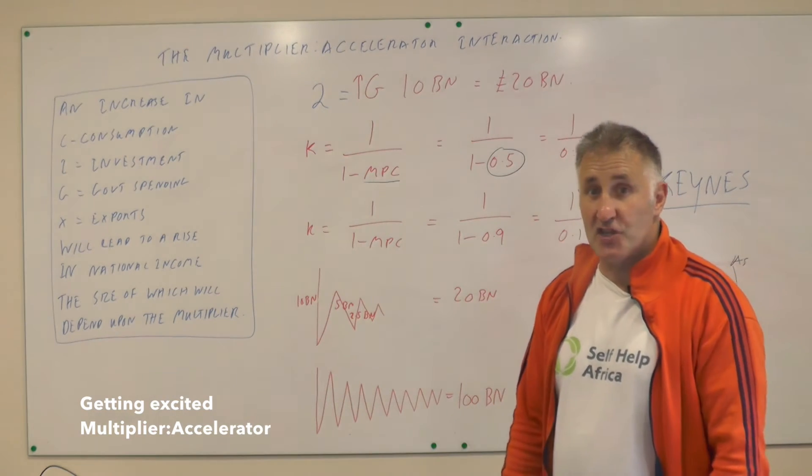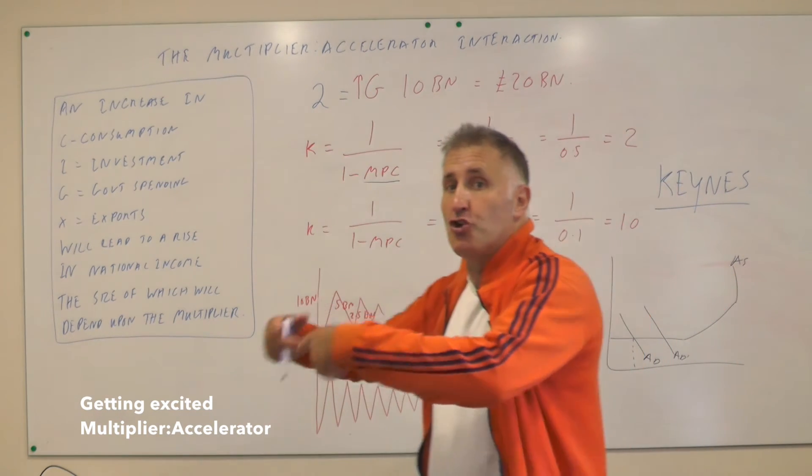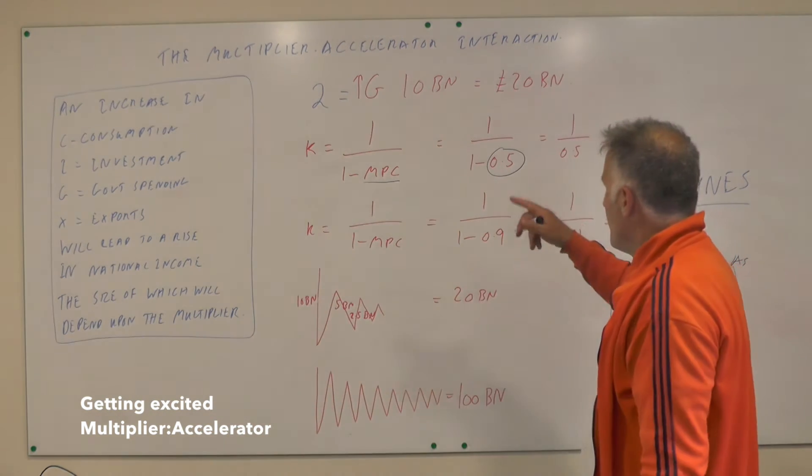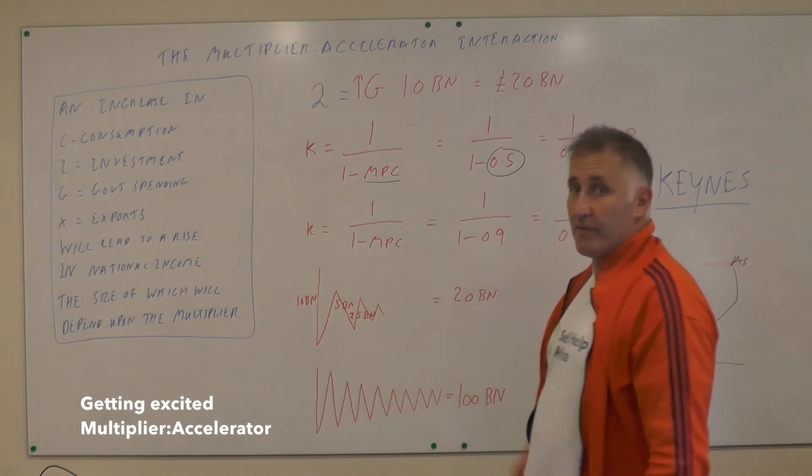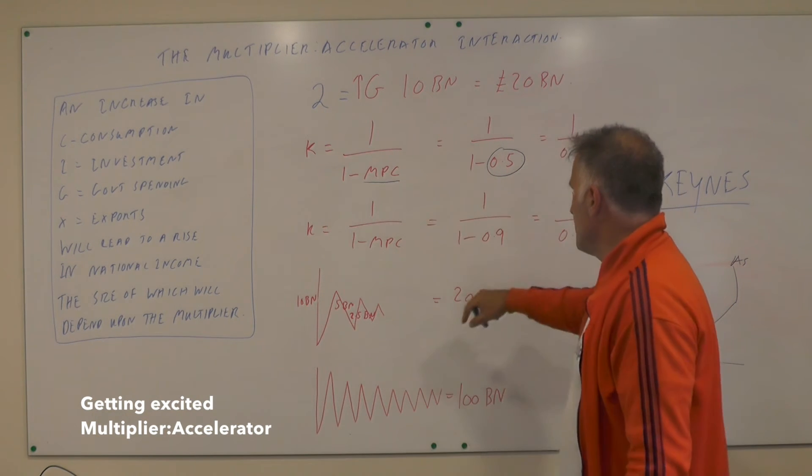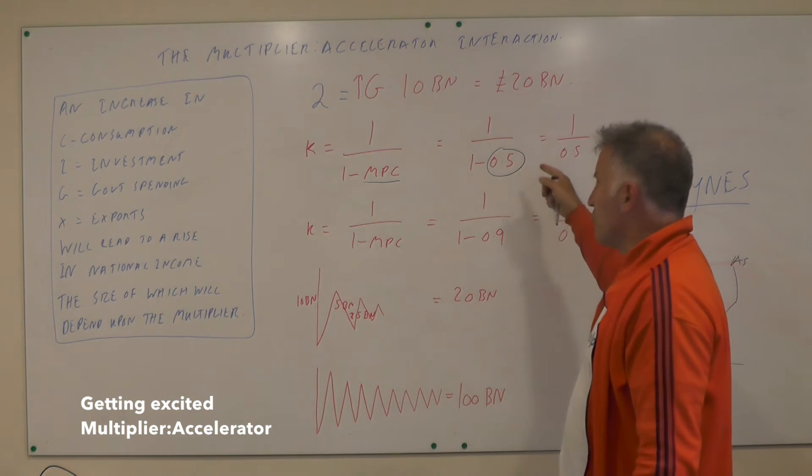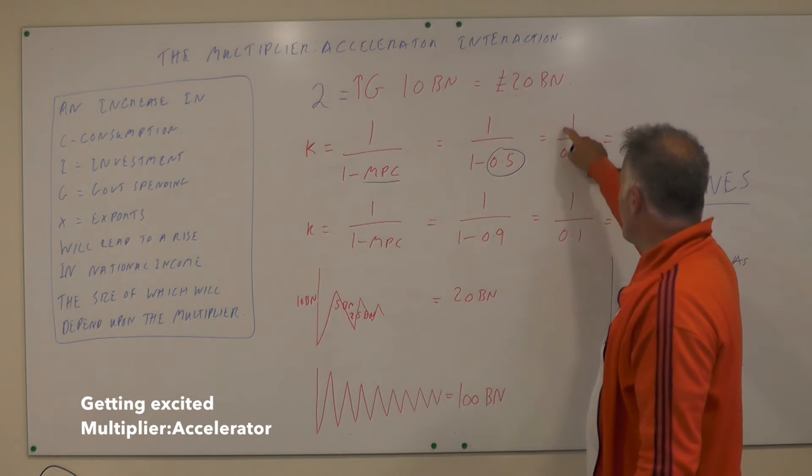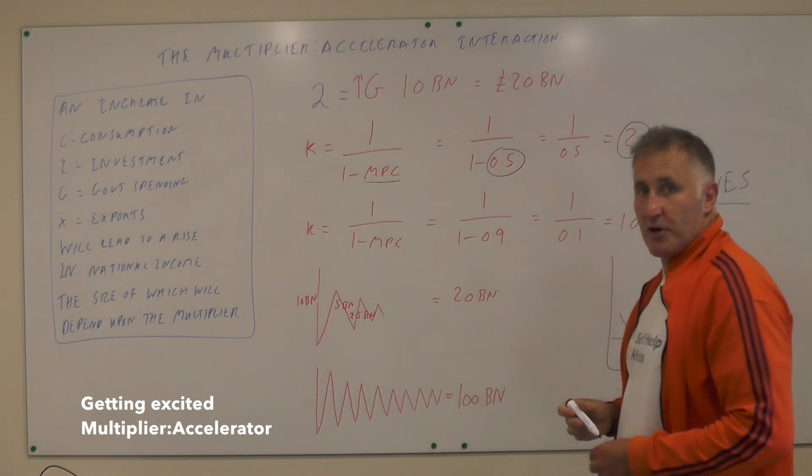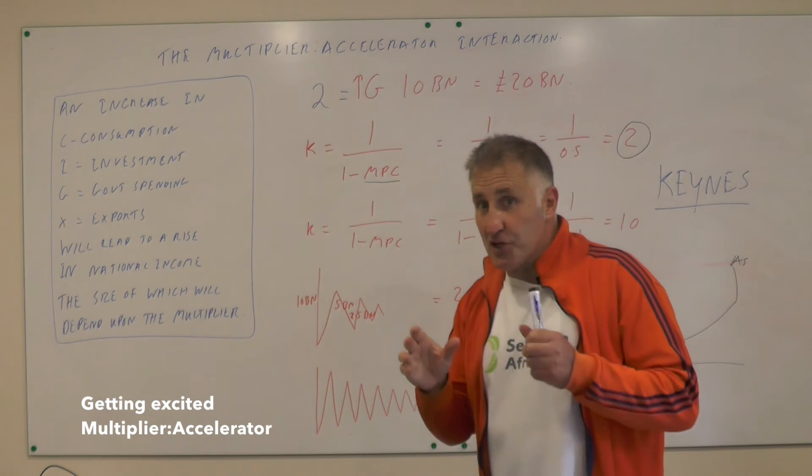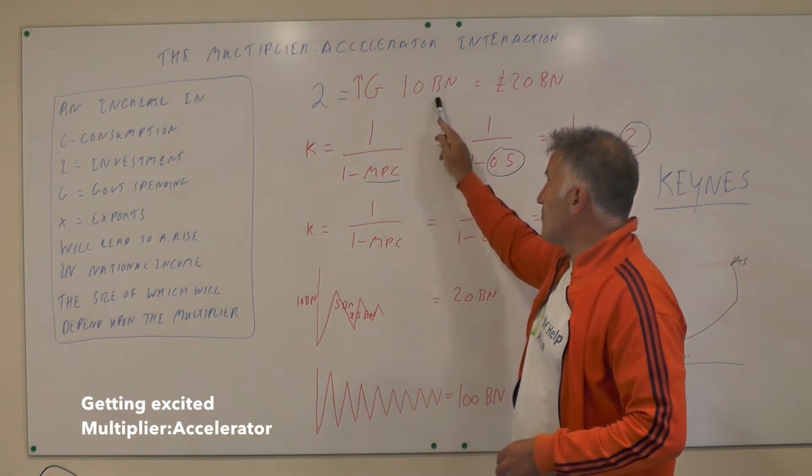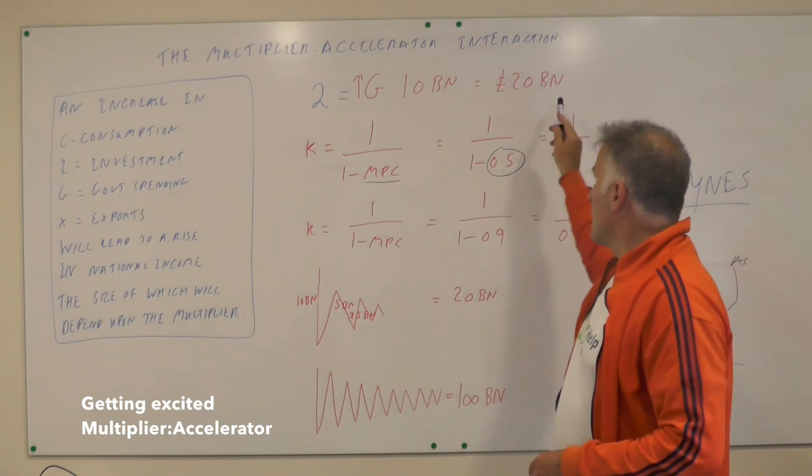So you go on and on. If the MPC is 0.5, then we do one divided by one minus the MPC. So it's one divided by one minus 0.5, and one divided by 0.5 is equal to two. So that is what the multiplier is equal to. The multiplier is equal to two.